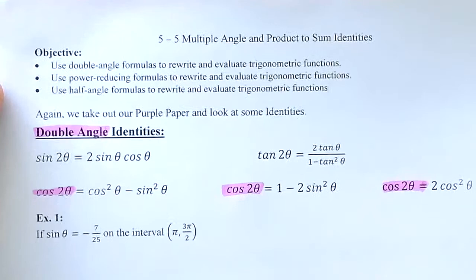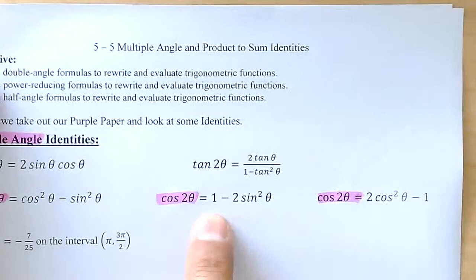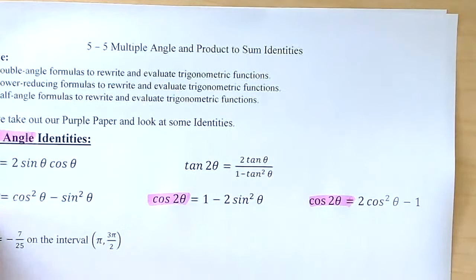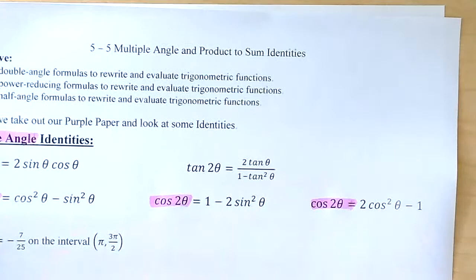For the cosine of 2 theta, there are three different formulas, and you have to know all three: cosine squared minus sine squared, 1 minus 2 sine squared, or 2 cosine squared minus 1. You should know all three, and it doesn't matter which one you use because you're going to get the same answer for each of them.